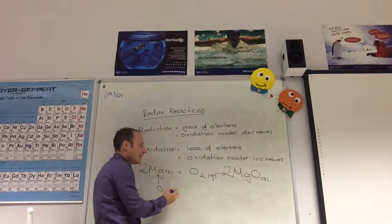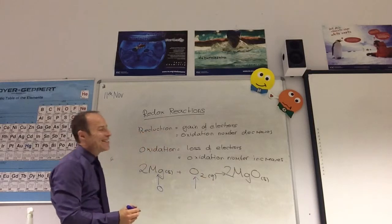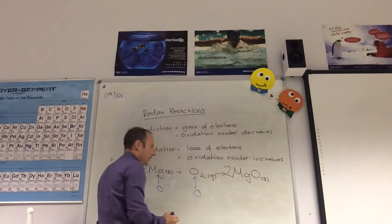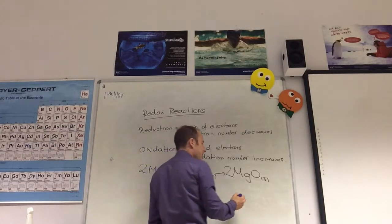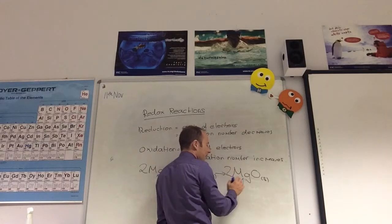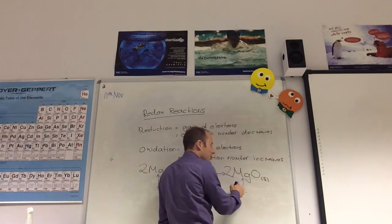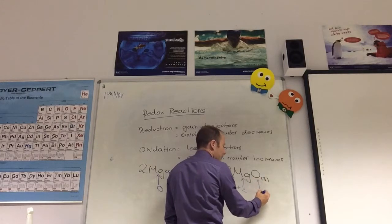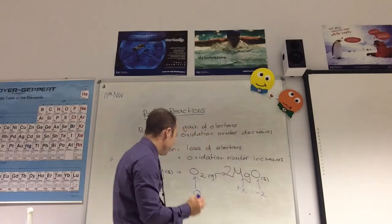What is the oxidation number of oxygen? Zero, elemental oxygen. What is the oxidation number of magnesium in the product? Plus two - it's in group two. And oxygen is minus two.